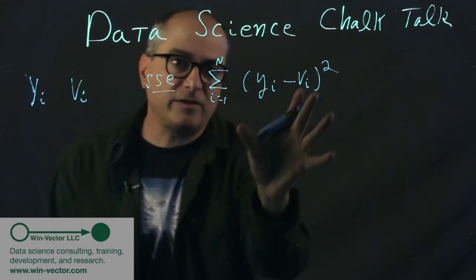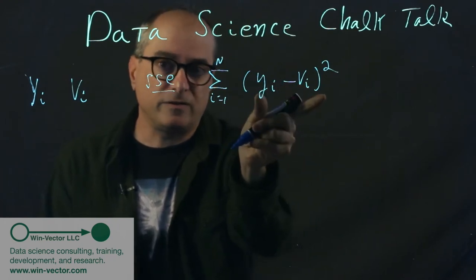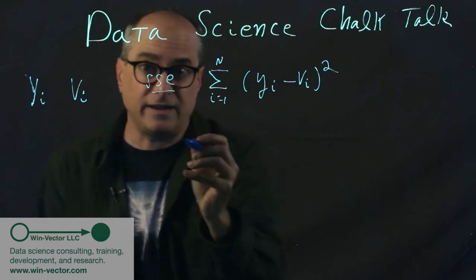And every bit of this little formula has a name. So this difference is called the error or the residual. This is the squared error. And this is the sum of squared errors, hence SSE.